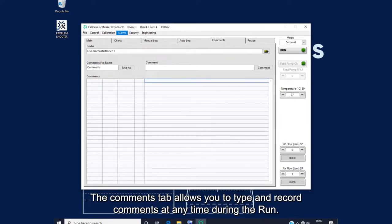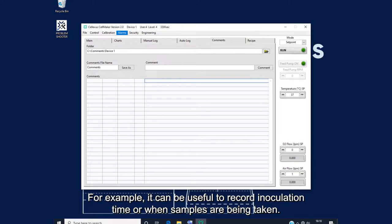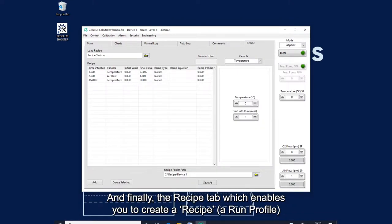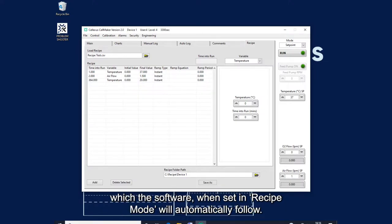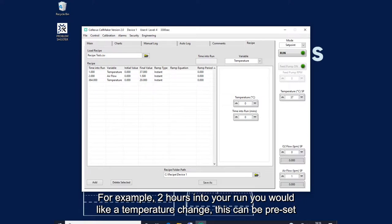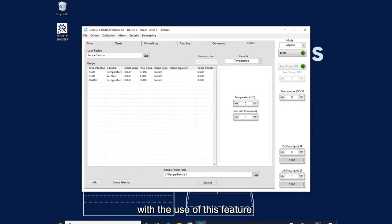The comments tab is to type and record comments at any time during the run. For example, it can be useful to record inoculation time or when samples are being taken. And finally, the recipe tab, and this enables you to create a recipe or a run profile, for which the software, when setting the recipe mode, will automatically follow. For example, two hours into your run, you would like a temperature change. This can be preset with the use of this feature.